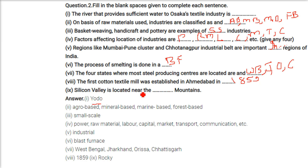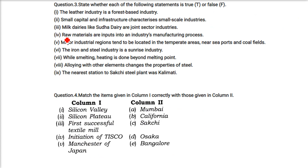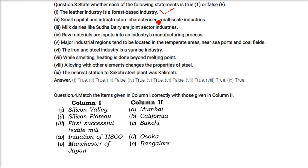True or false: Silicon Valley is located near the Rocky Mountains — this needs correction; it is in California. The leather industry is a forest-based industry — true. Small capital and infrastructure characterizes small-scale industry — true. Milk dairies like Sudha Dairy are joint sector industries — no, they are cooperative industries. Raw materials are inputs into an industry manufacturing process — true.